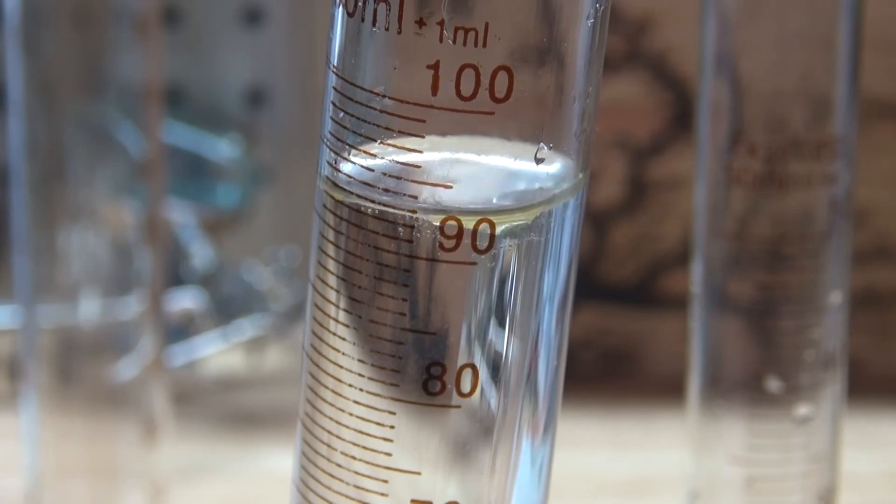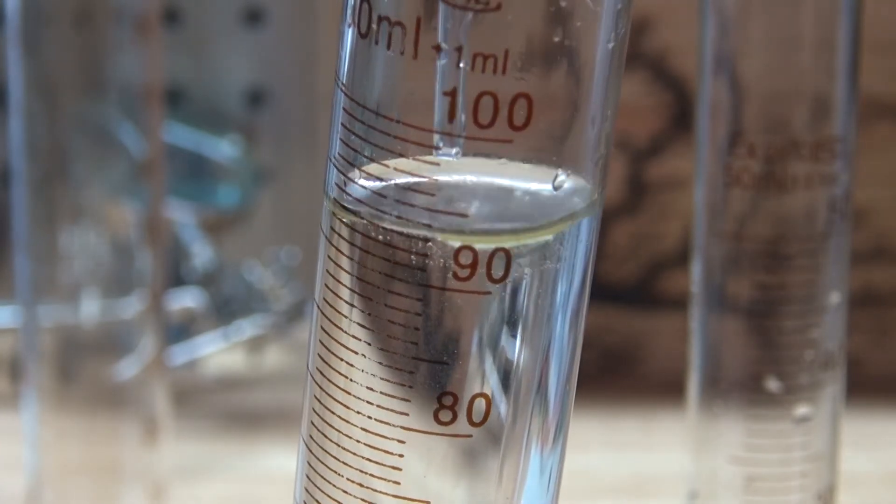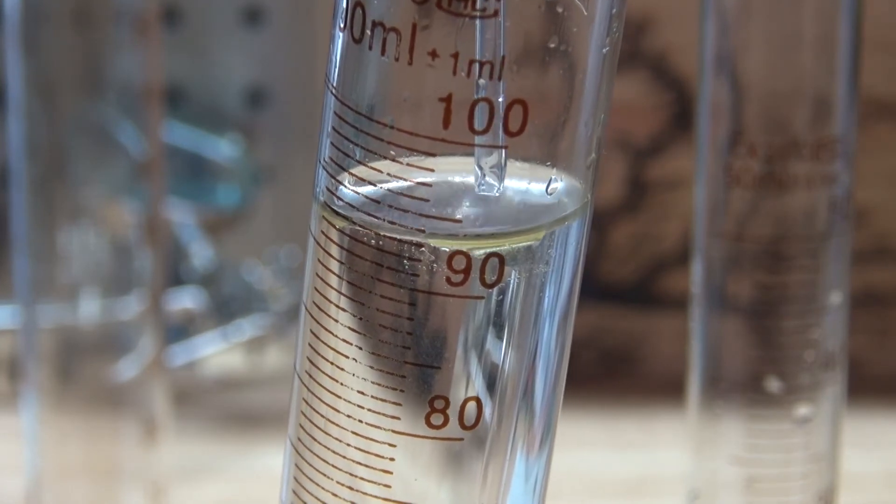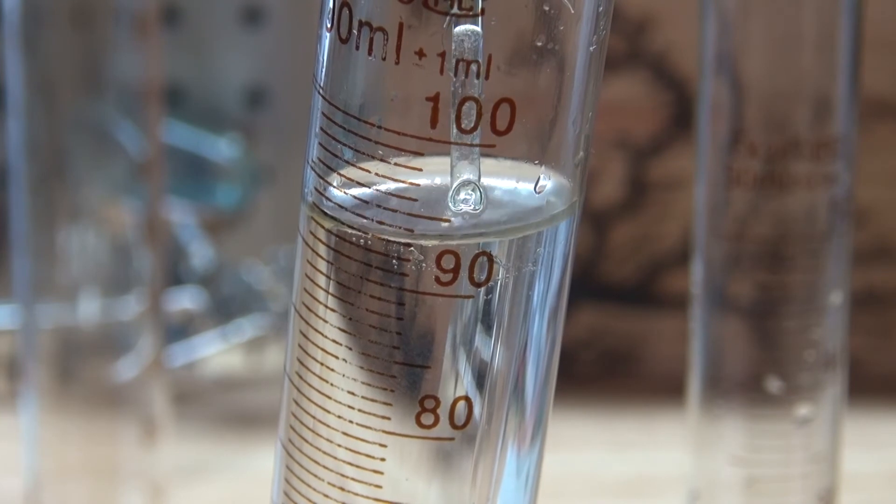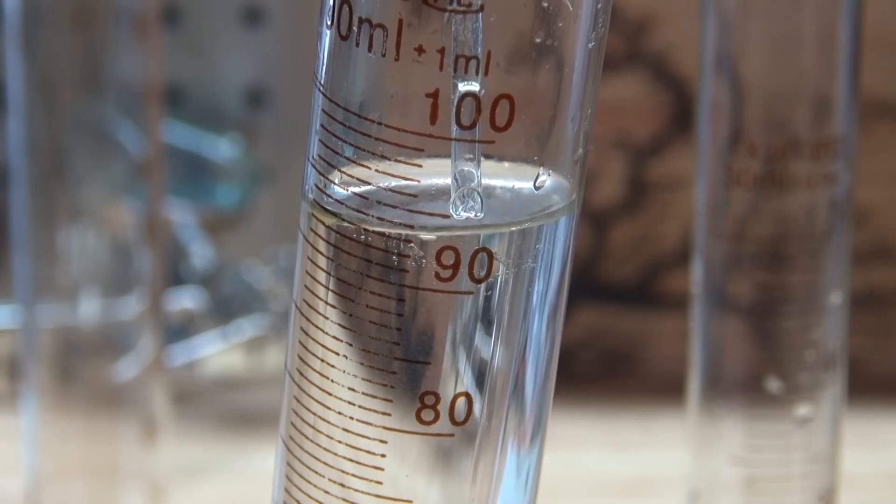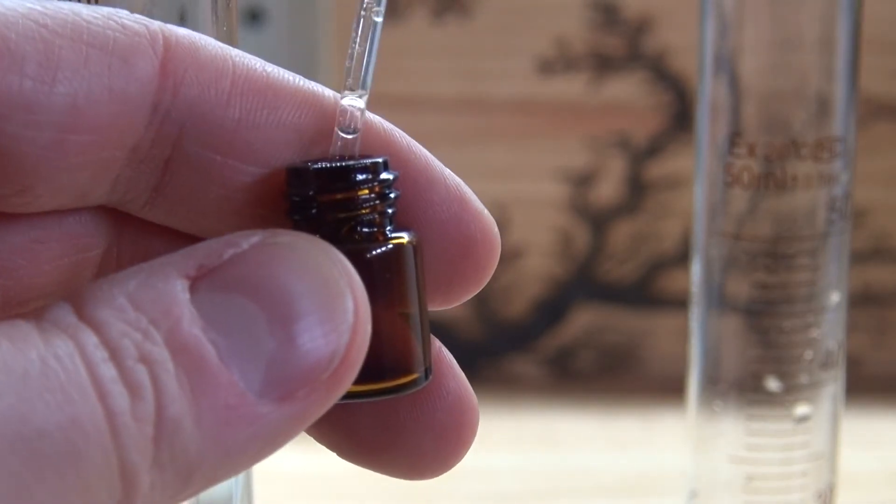So I'm going to take my pipette and suck out some of the rosemary essential oil that's sitting on the top. And put it inside the amber vial just like that.